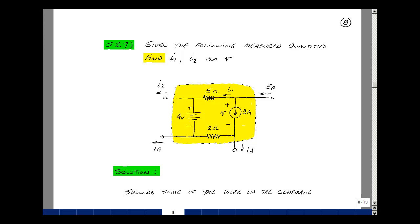Given this little window into a circuit with some of the measured voltages and currents given, could you solve for the current I1, I2, and the voltage V? Here's I1, here's I2, and here's the voltage V.